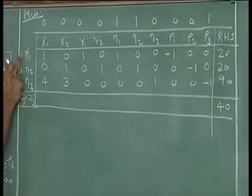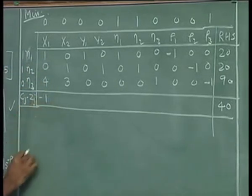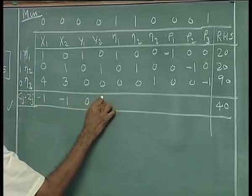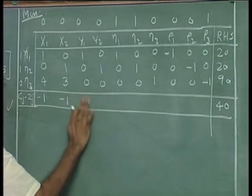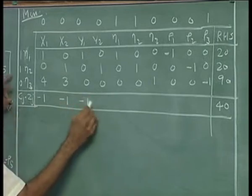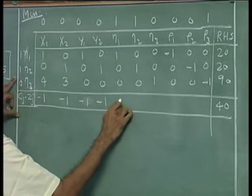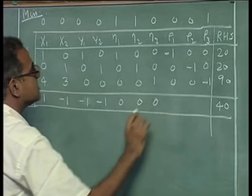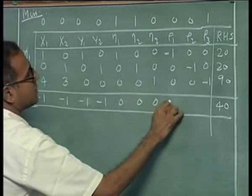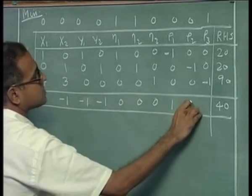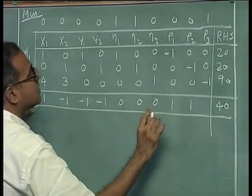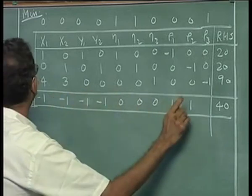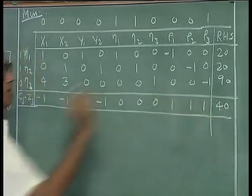you will get 1 into 1, 1. So this will become minus 1, this will also become minus 1, this will become 0, this will become 0, this will also become 0, this will also become 0. You will get a plus 1 here and you will get a 1 here and 40.